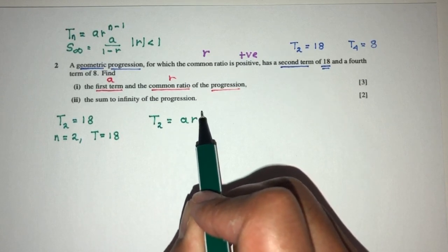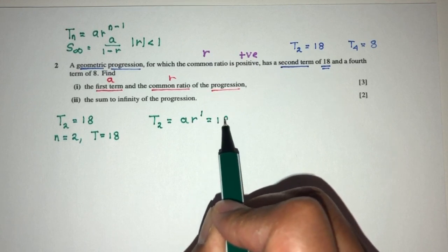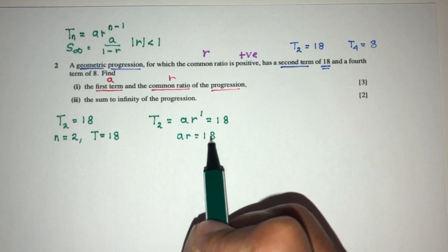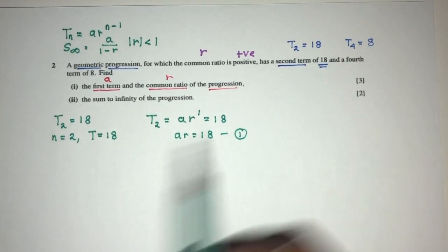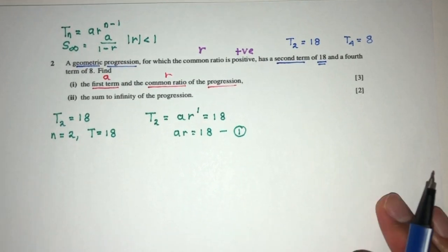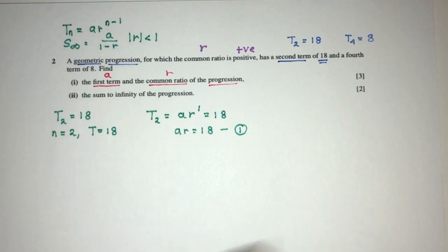n is 2 minus 1 is 1. It is supposed to give you the value of 18. So, a times r is 18. That will be my equation number 1. Now, moving on to part 2, what do we have? Same thing.